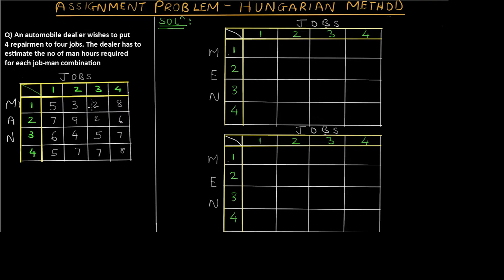As per Step 1, we select the minimum from the first row, which is 2, and subtract it from each value: 5−2=3, 3−2=1, 2−2=0, 8−2=6. For the next row the minimum is again 2, giving us 5, 7, 0, 4. For the third row the minimum is 4, giving us 2, 0, 1, 3. Subtracting 5 from the last row gives us 0, 2, 2, 3. Step 1 is now done.